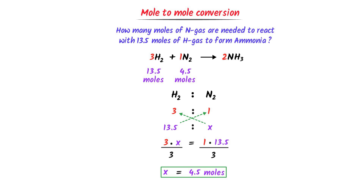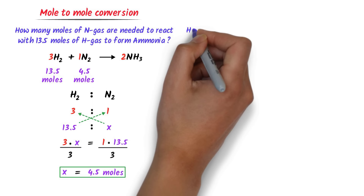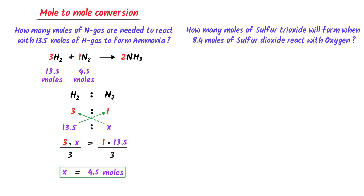Secondly, consider this problem: how many moles of sulfur trioxide will form when 8.5 moles of sulfur dioxide react with oxygen? I write the balanced chemical reaction: SO₂ + O₂ → SO₃. Balancing: 2 oxygen atoms + 2 oxygen atoms = 4 oxygen atoms in reactants; 3 oxygen atoms in products requires coefficient 2. With 2 sulfur atoms in products and 2 in reactants, the complete balanced equation has coefficients 2, 1, and 2.